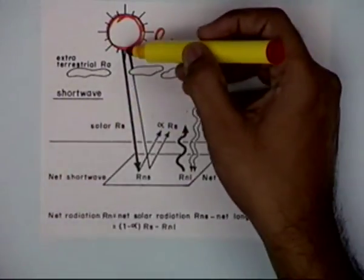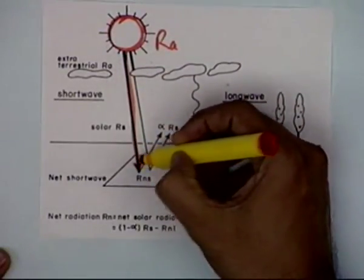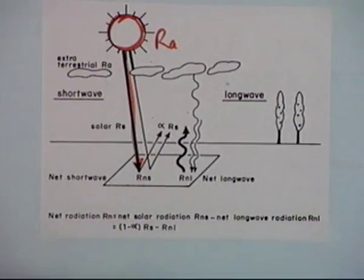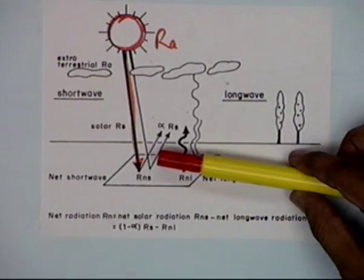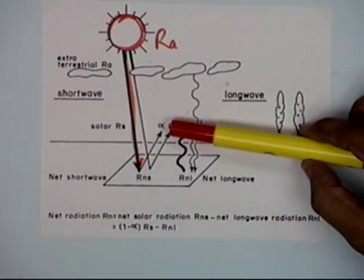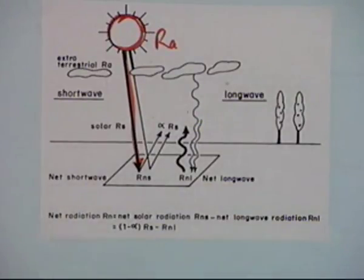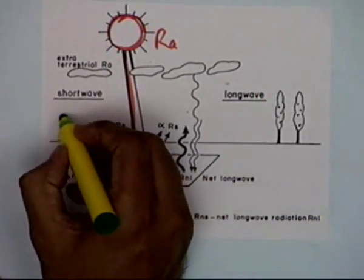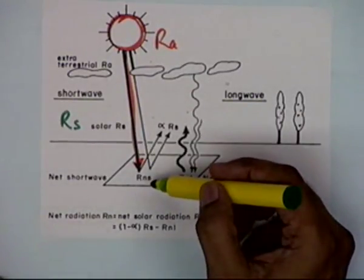When you are looking from a particular point on the earth, for a particular location and a particular duration of the year, the amount of Ra, the extraterrestrial radiation, will remain the same — that is a unique quantity. But as Ra approaches the earth, some part of it gets absorbed in the atmosphere and some part gets scattered, which is accounted for in terms of RS.